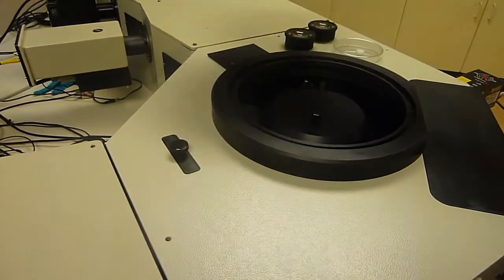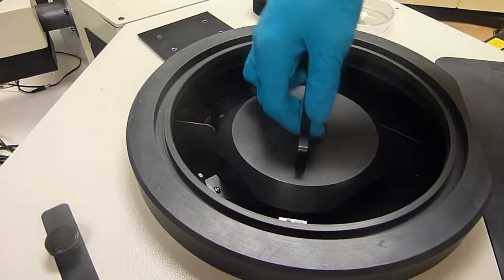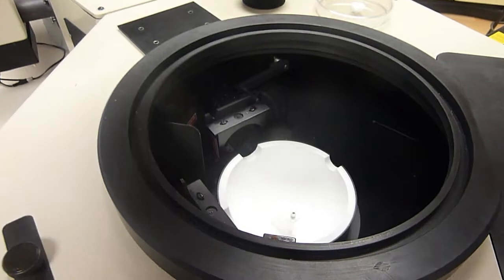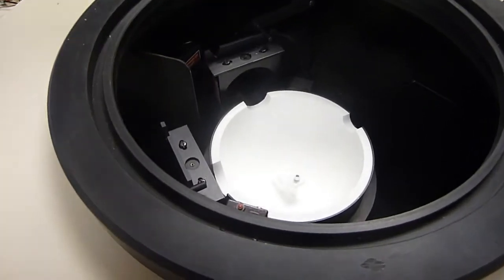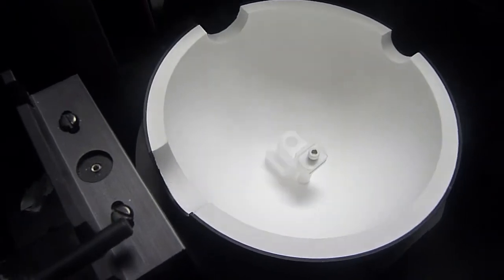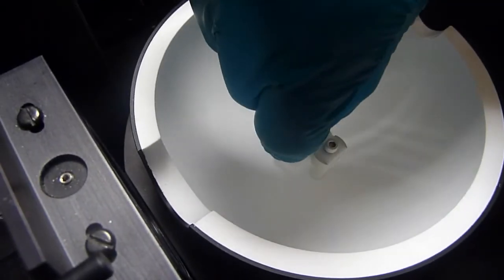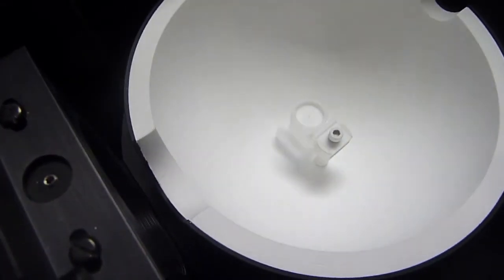Within the sample chamber here I have the integrating sphere and I can just lift up the top of the integrating sphere. And you can see here that I have a little region here where I would input some powders. That's where my powder would go.